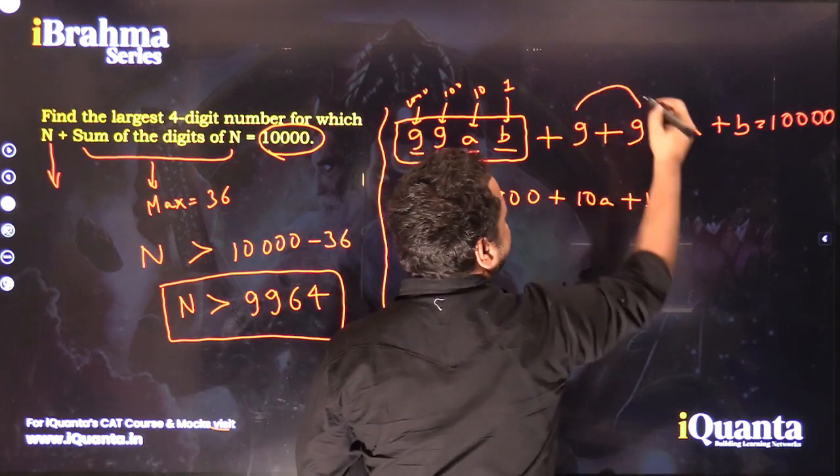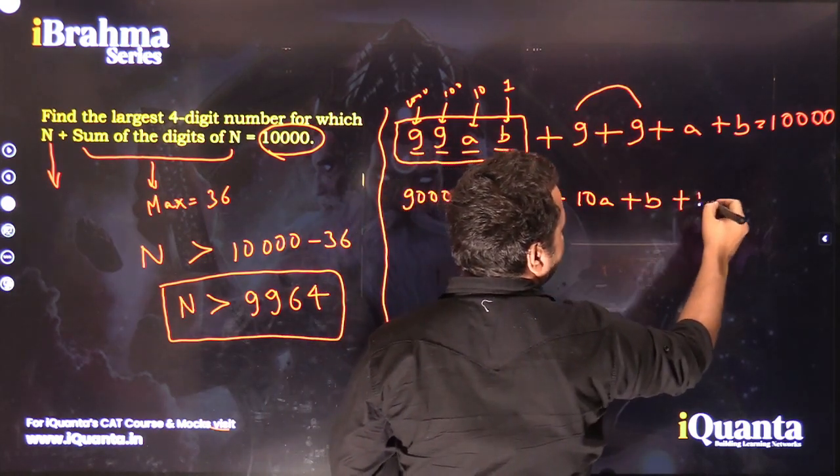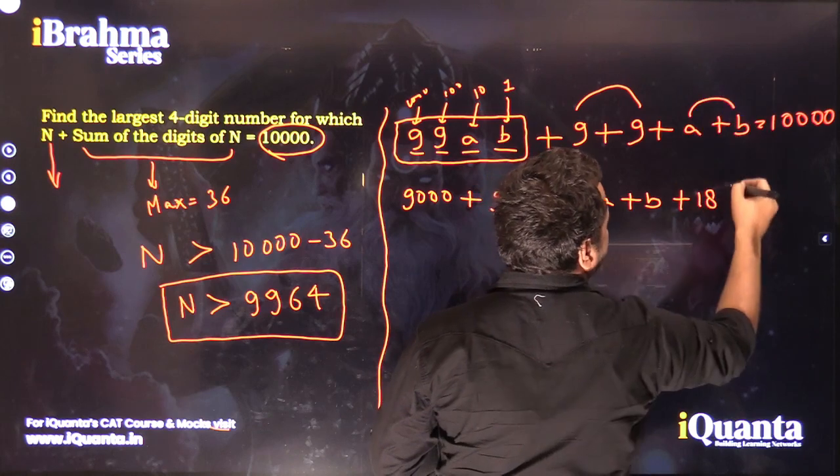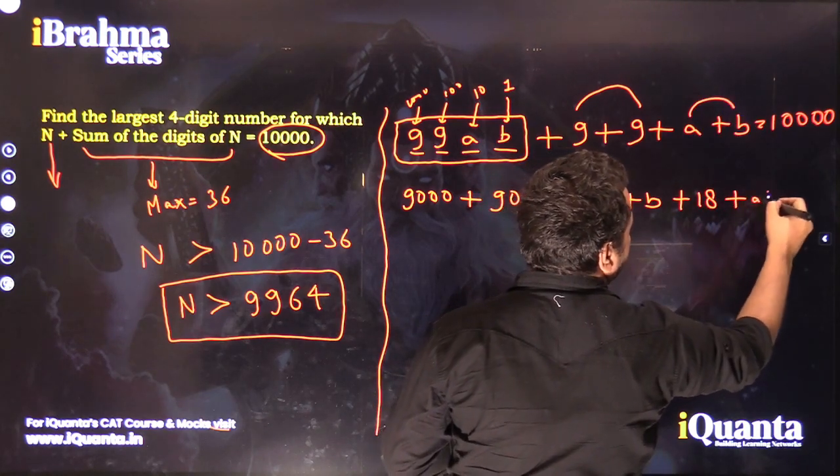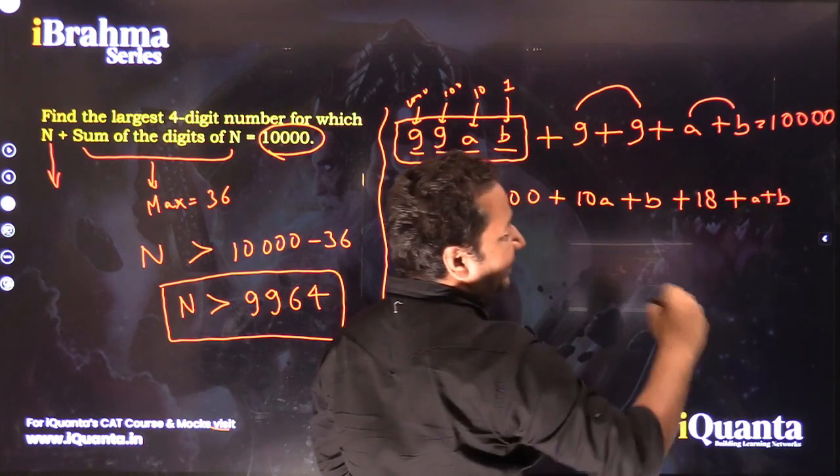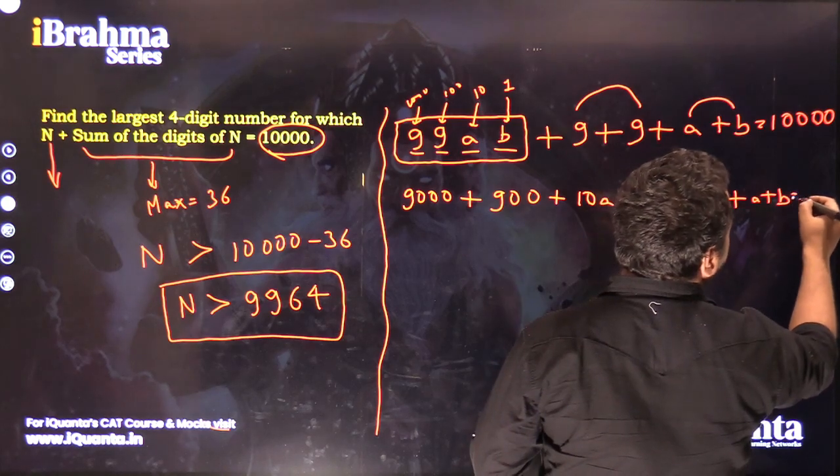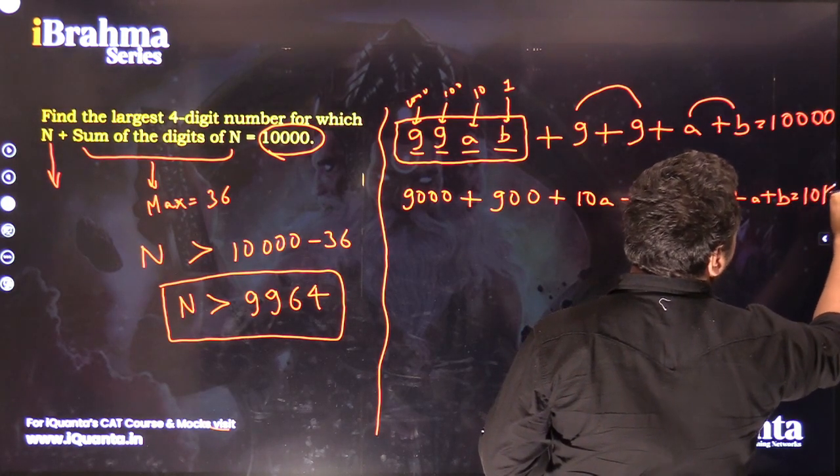Plus 9 + 9 = 18, then plus A plus B. This entire expression should be equal to 10,000.